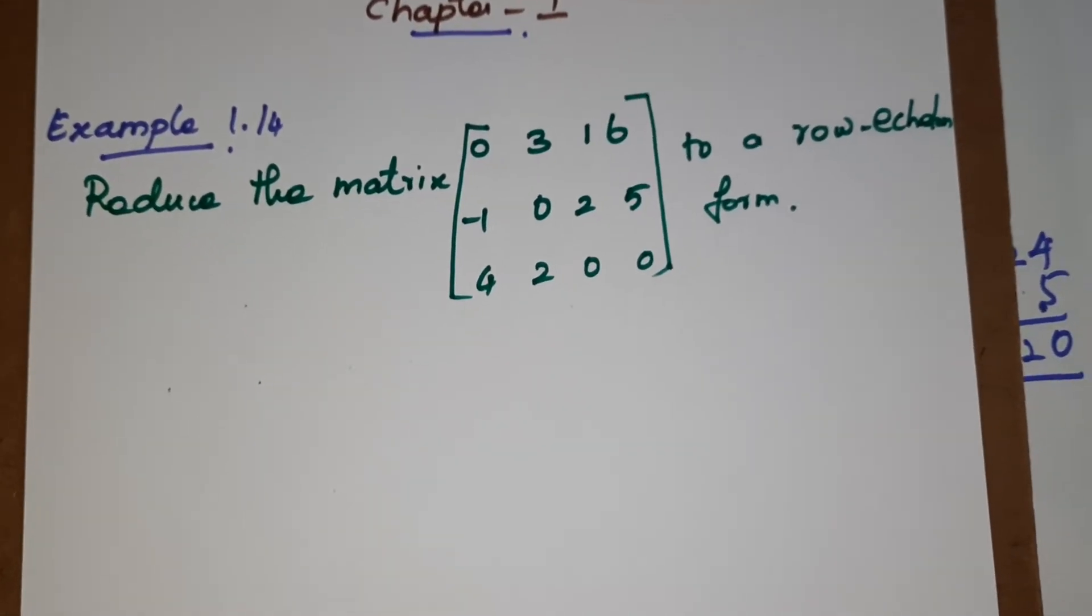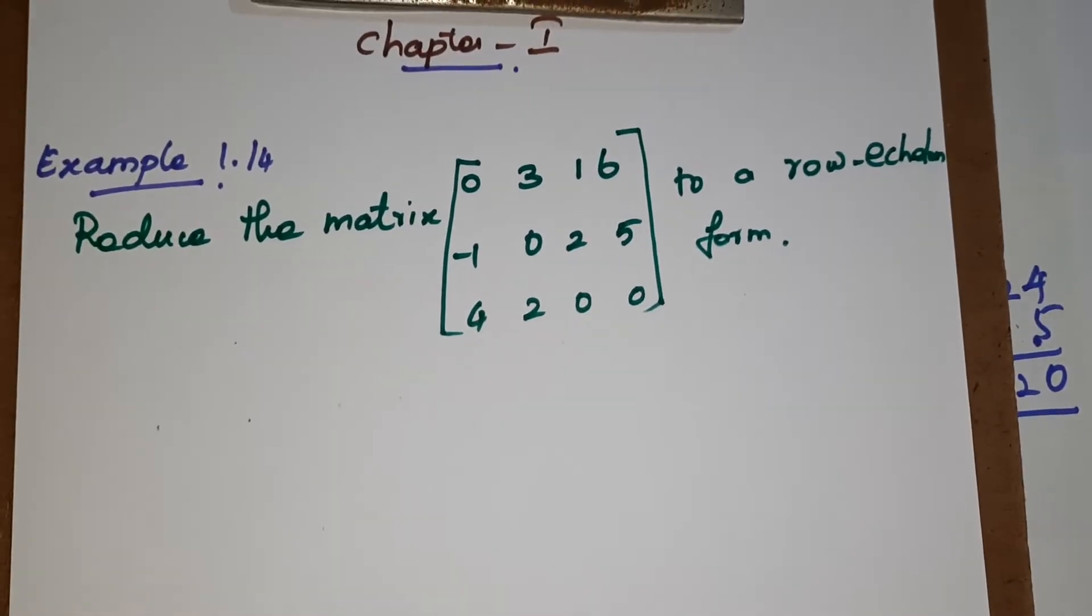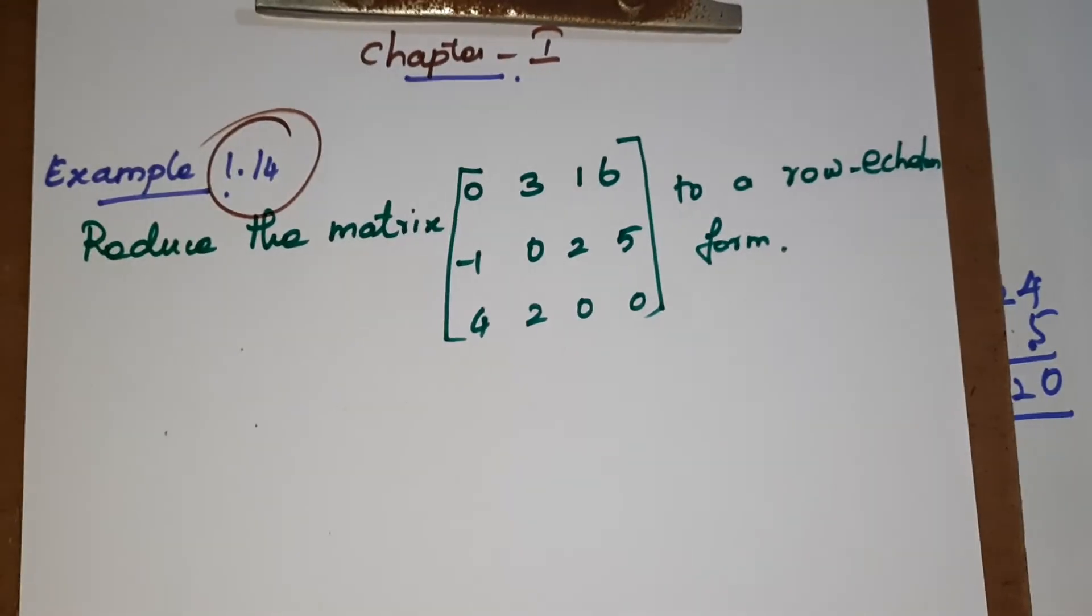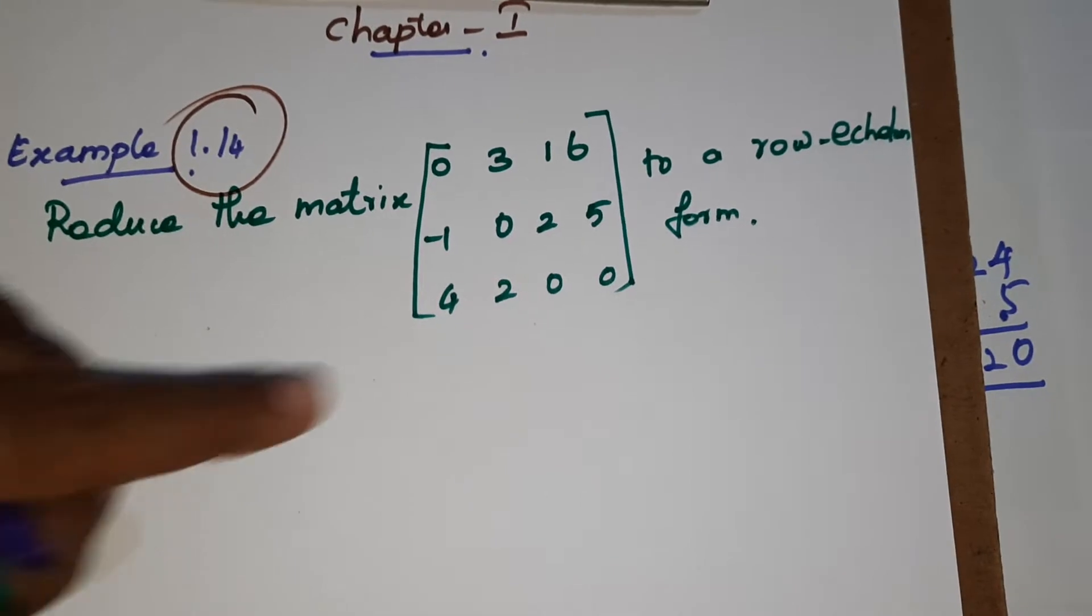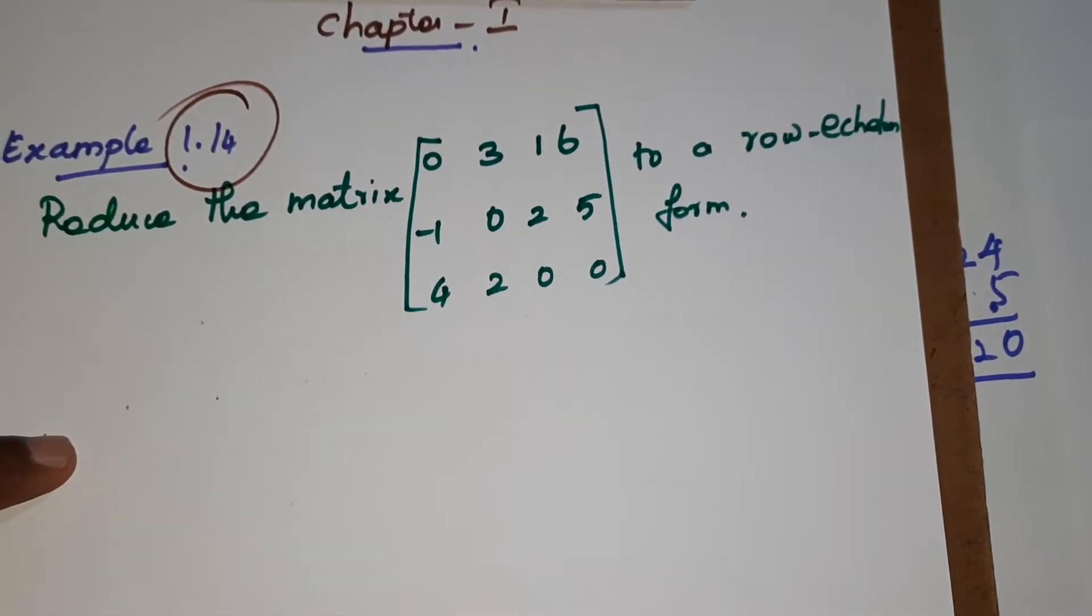Good evening everyone, welcome to Denimax. Now we are moving to chapter number 1, example 1.14. The same concept like example 1.13, reduce the matrix to a row echelon form.